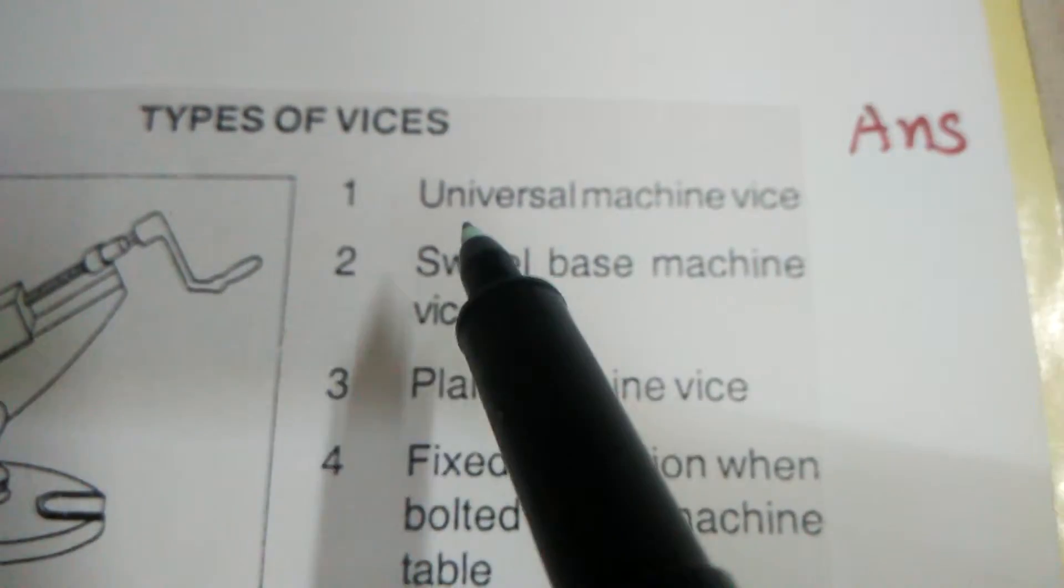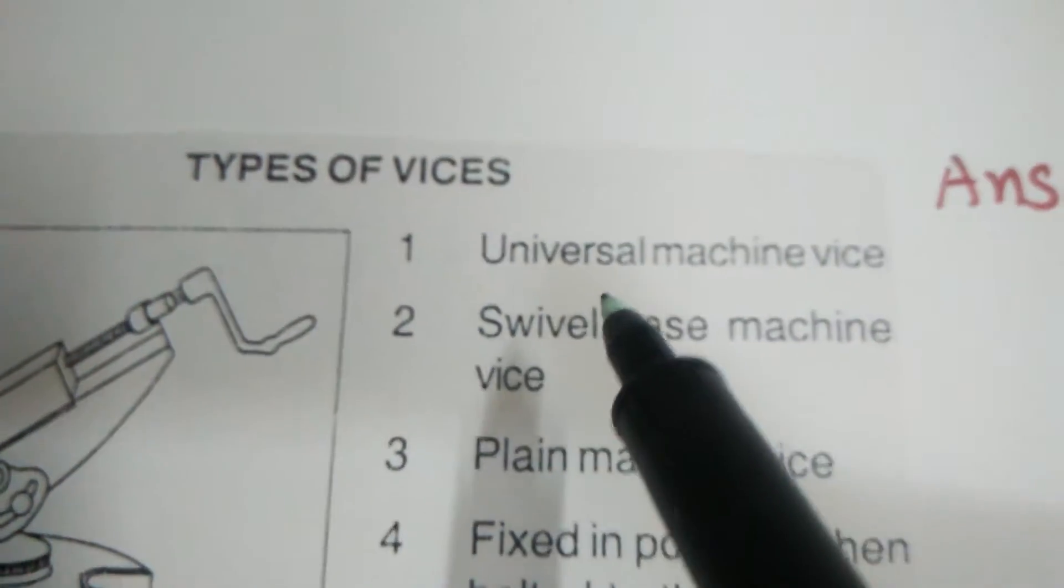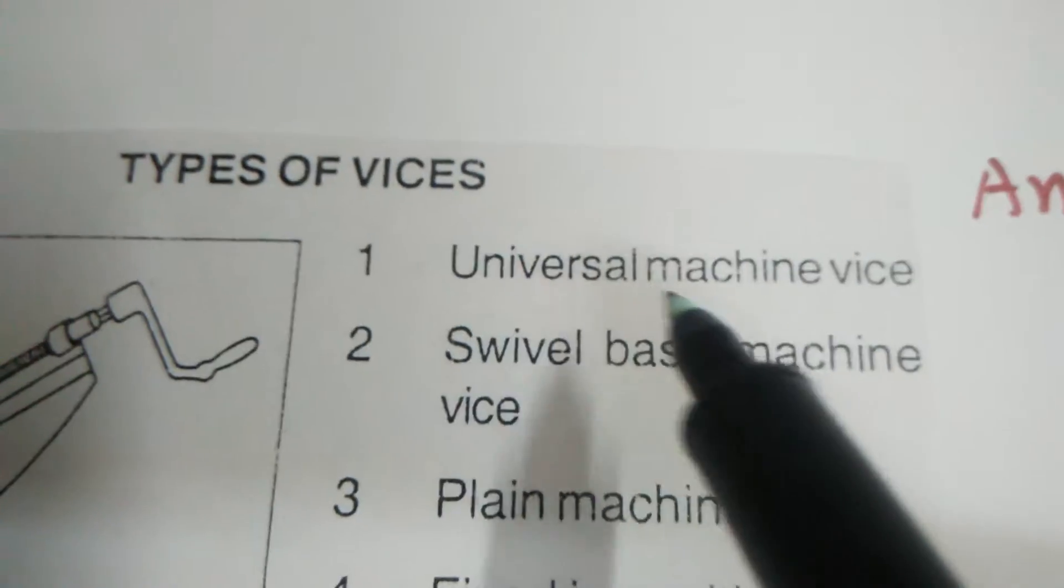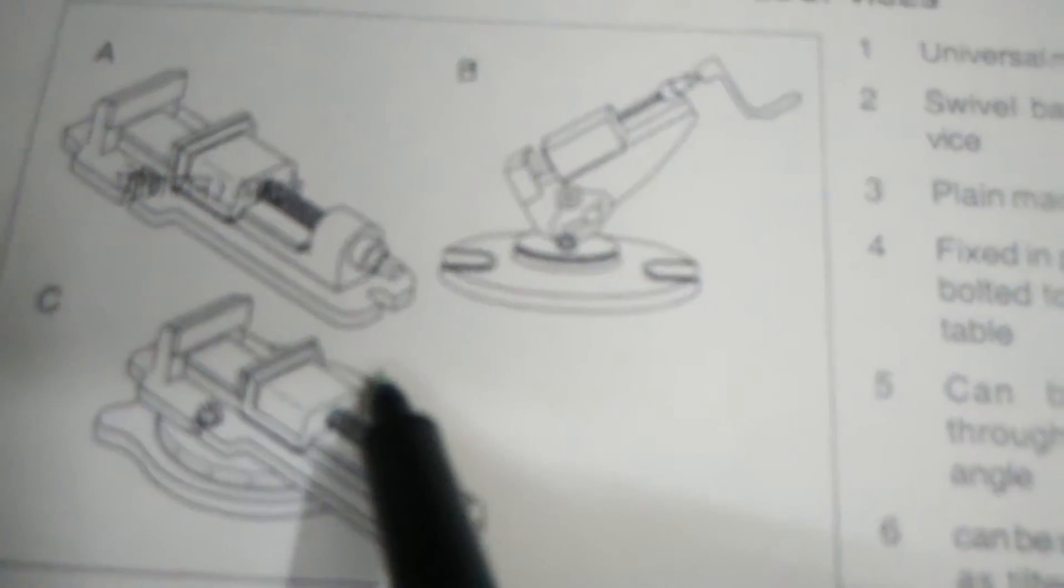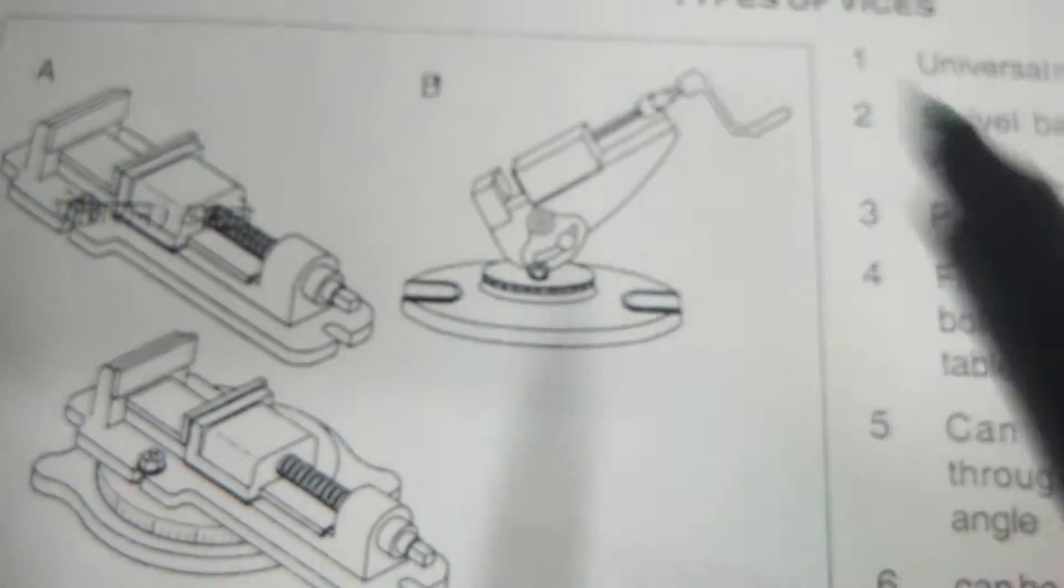Now, you answer: Universal Machine Vice. In this diagram, which is Universal Machine Vice? B is Universal Machine Vice. Then write down here, Answer B.